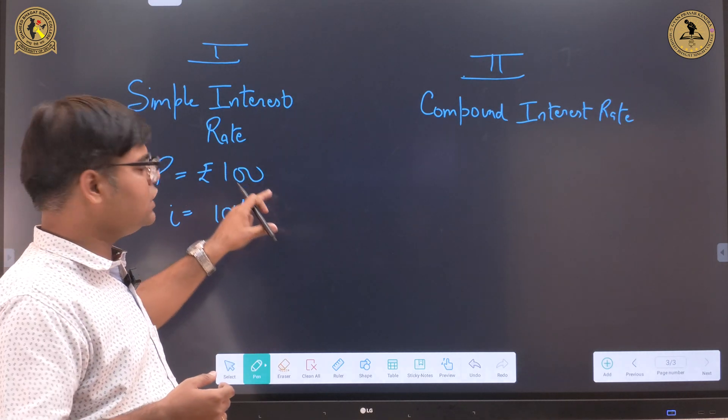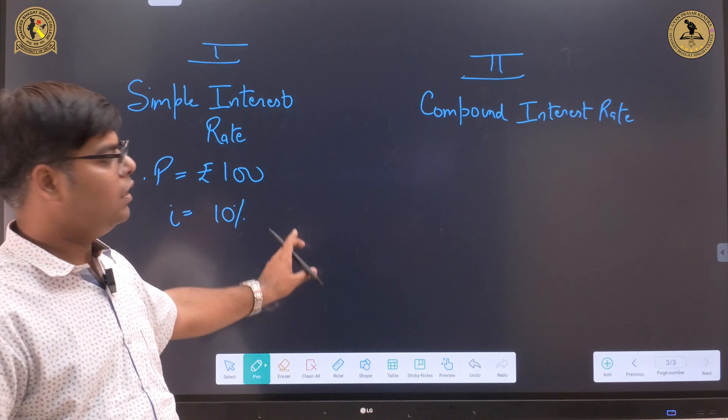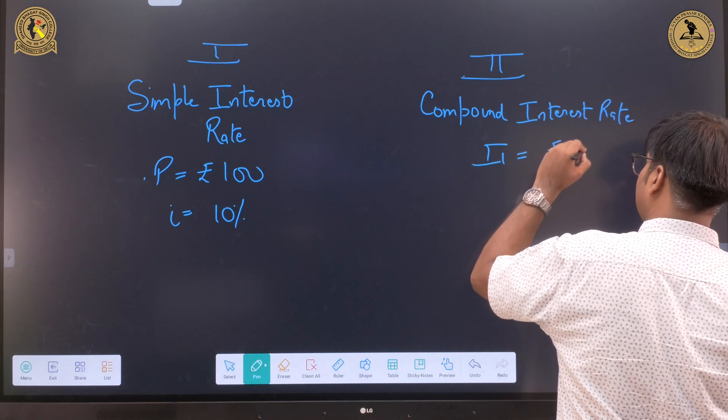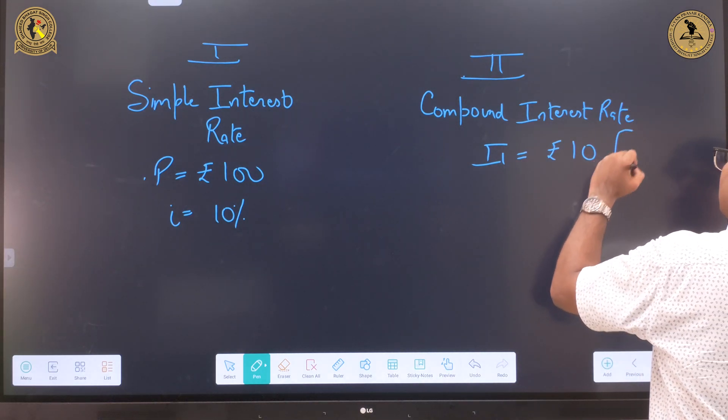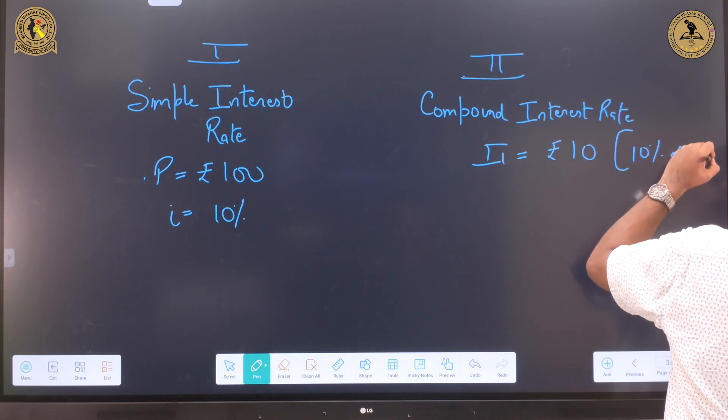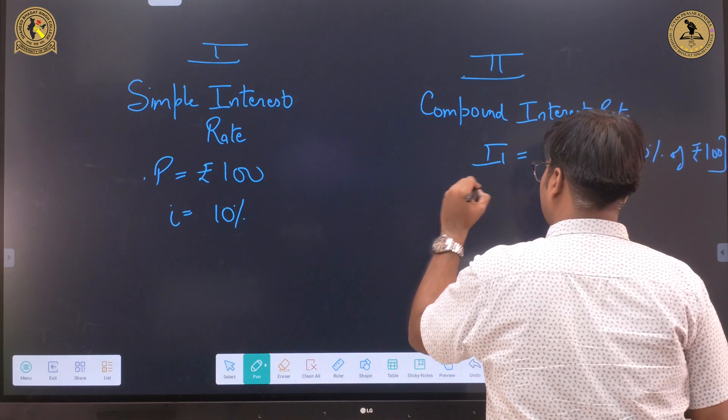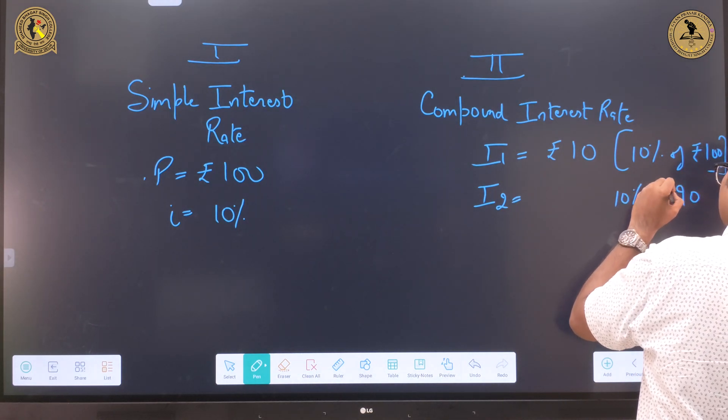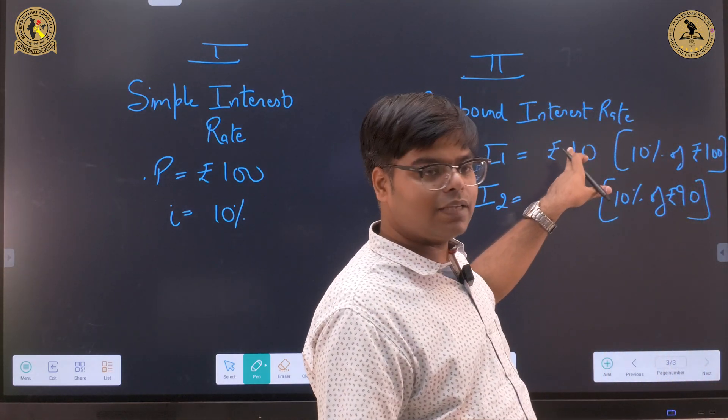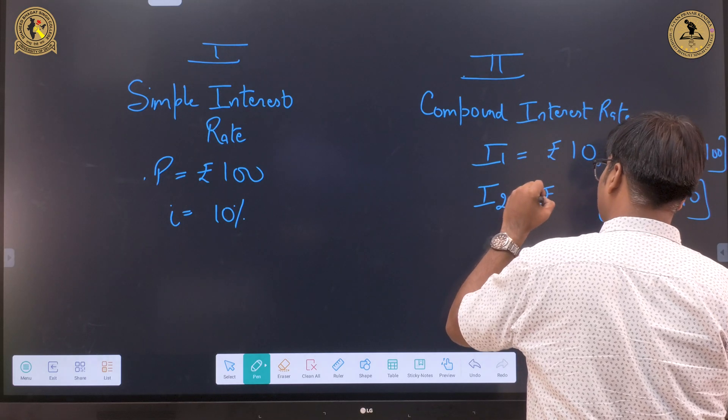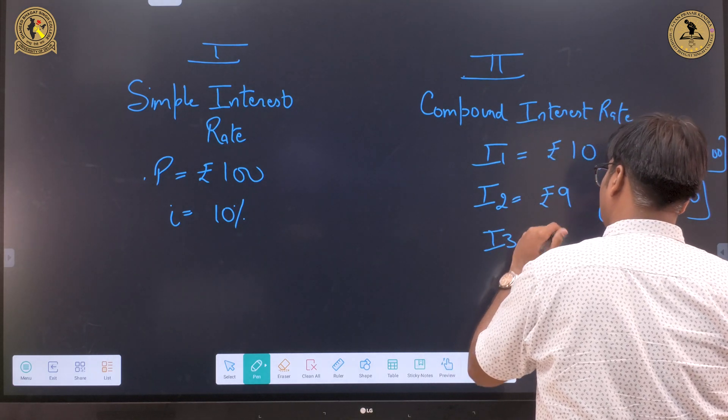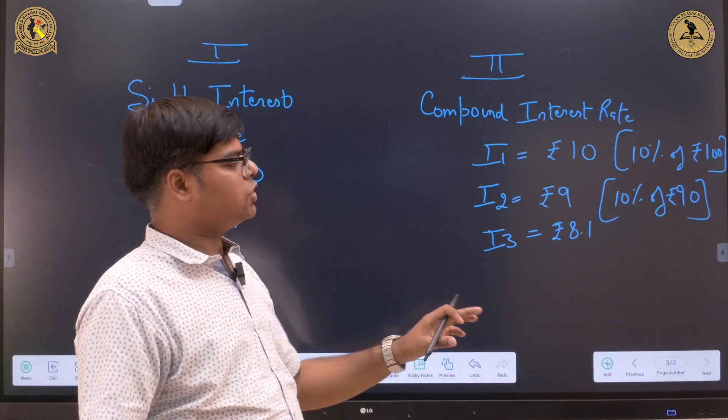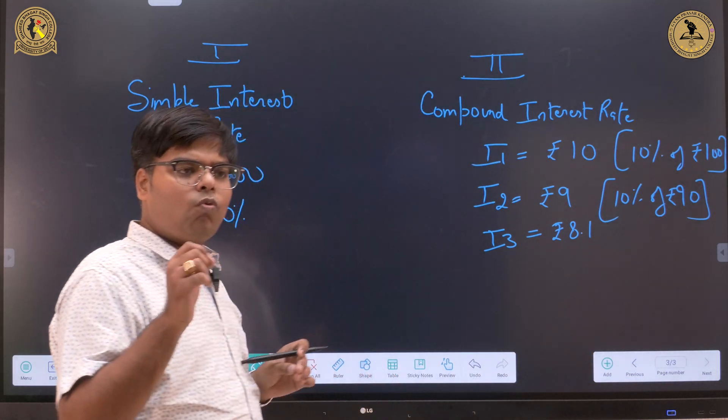However, in case of compound interest rate, it means I will be getting interest of rupees 10 in year 1, which is 10% of 100 rupees. In year 2, I will be getting 10% of 110 rupees, that is 100 rupees plus the interest, which is 110. 10% of 110 is 11 rupees. In year 3 it will be 12.1 and so and so forth.